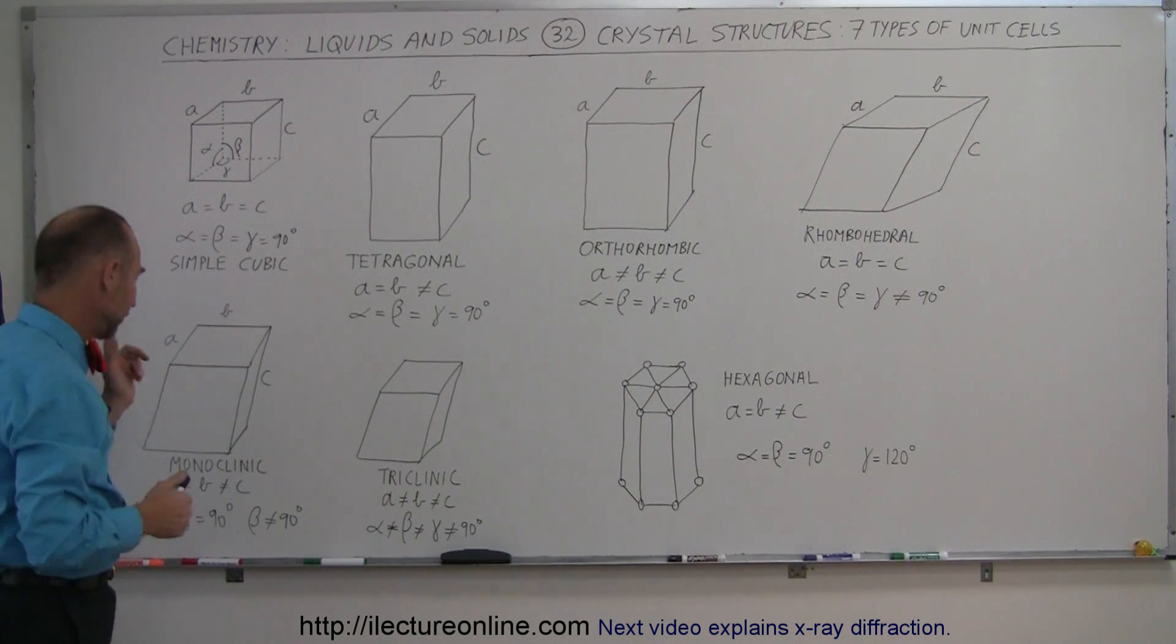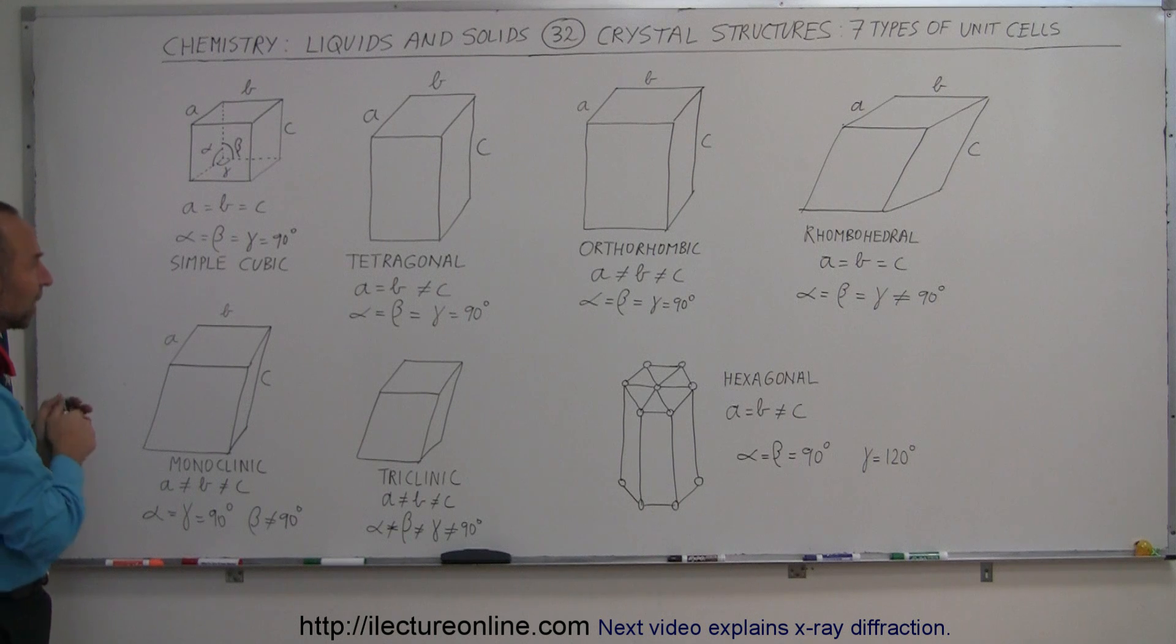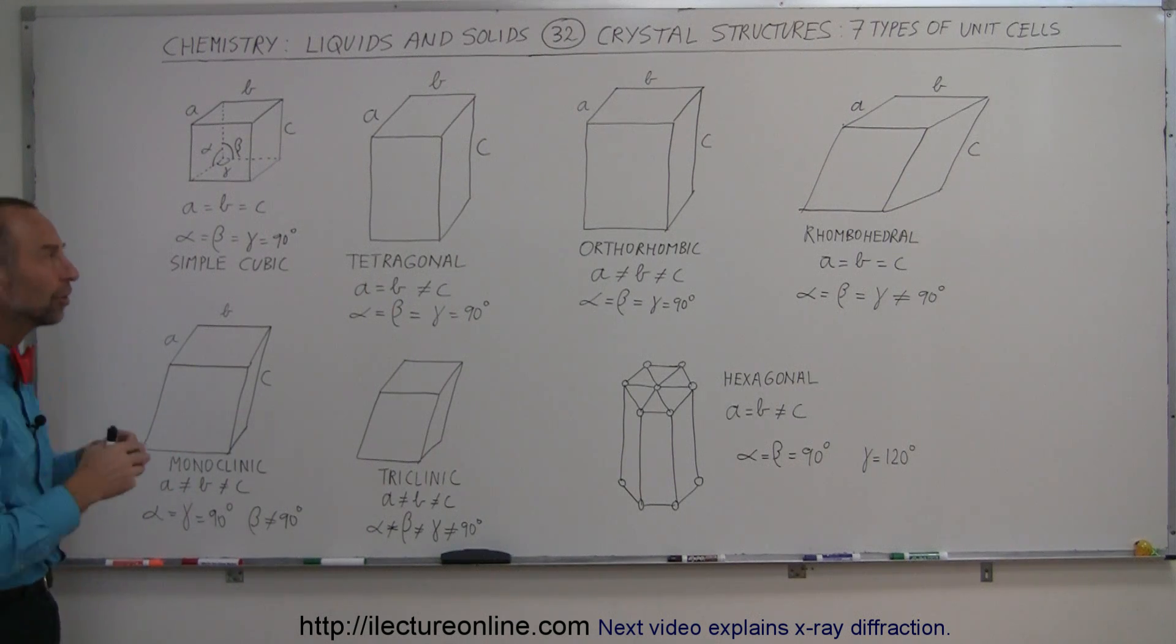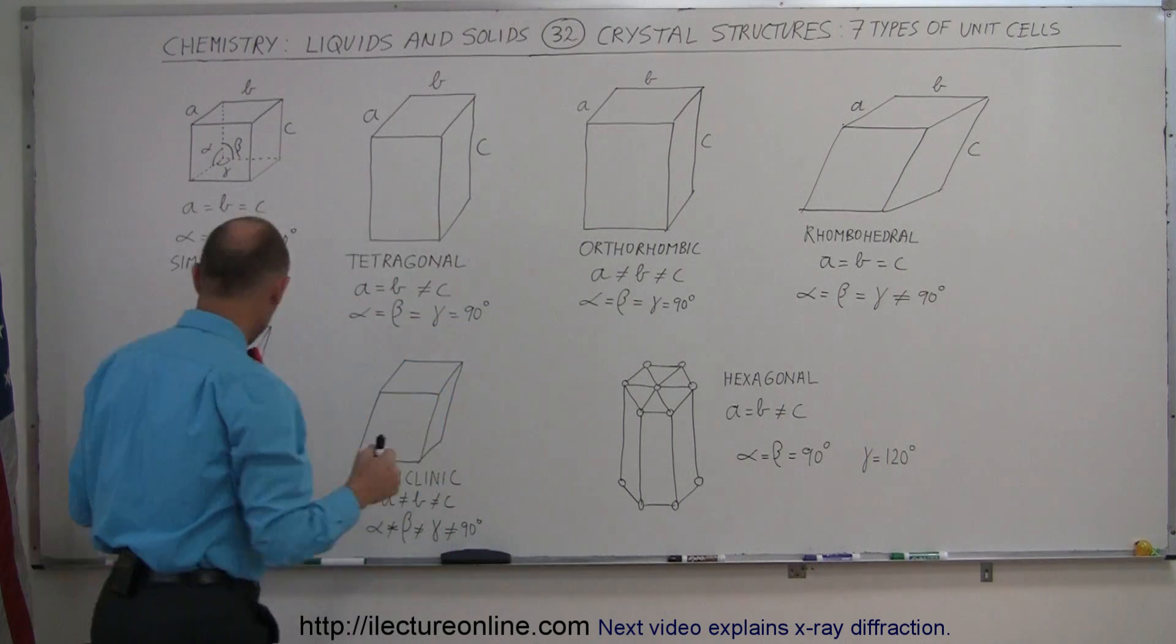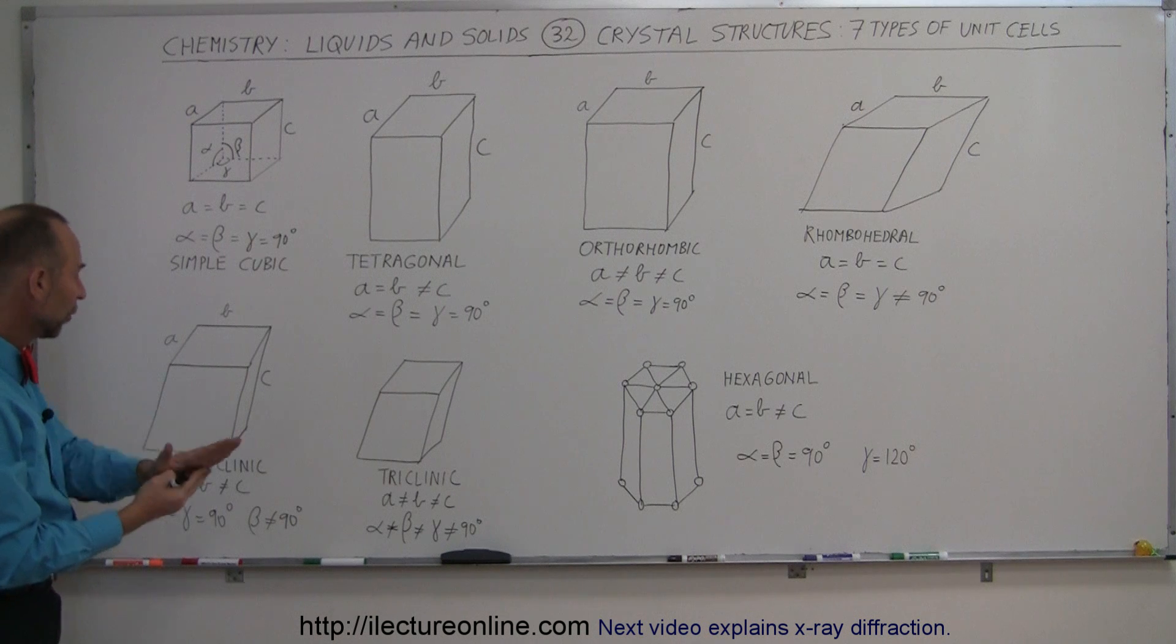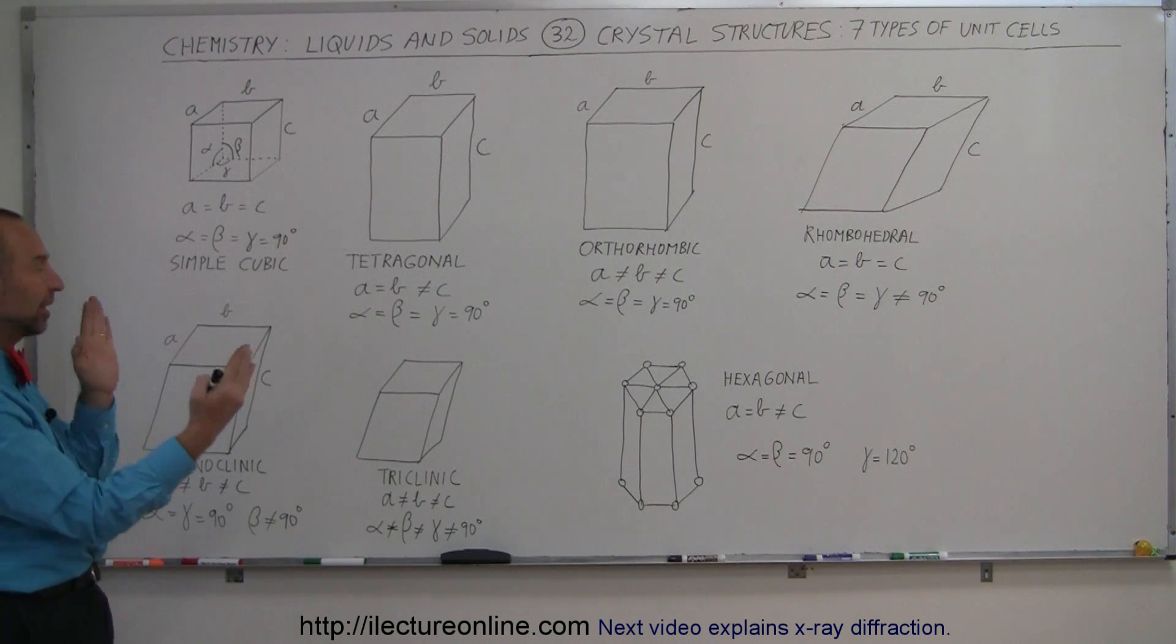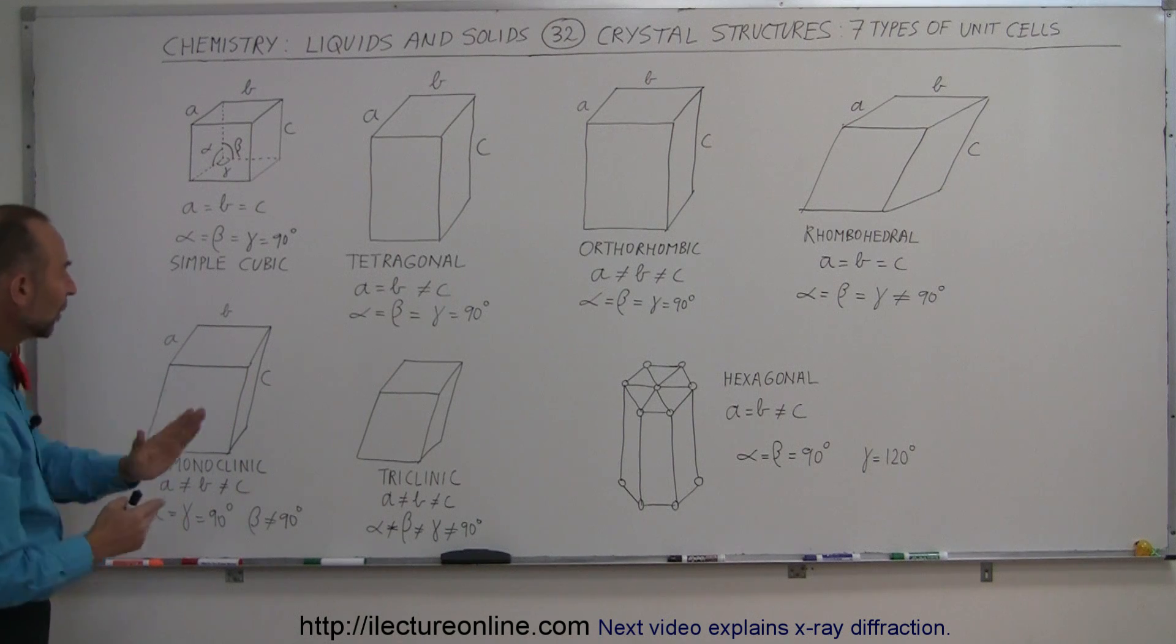Now for the fifth one here, we talk about monoclinic. So monoclinic and rhombohedral are kind of similar, the only difference is that A, B, and C are not the same in size, they're all different in size. So it's kind of like an orthorhombic shape, where A, B, and C are not the same, but it's being pushed over in one direction. Monoclinic means that it leans over or is pushed over in one direction only, such that alpha and gamma are equal to 90 degrees, but beta is not. So basically in this view from here, it's being pushed over to the right in one direction only.